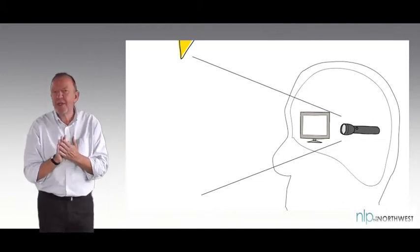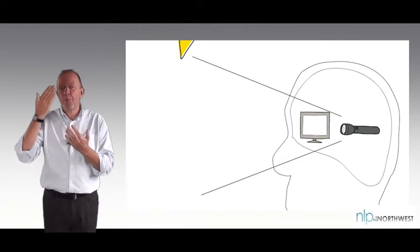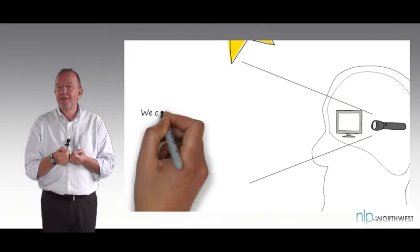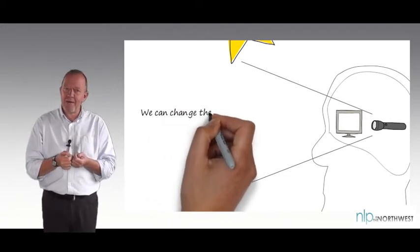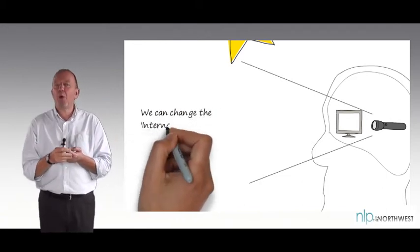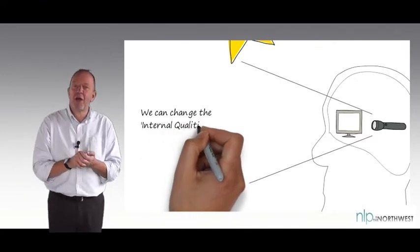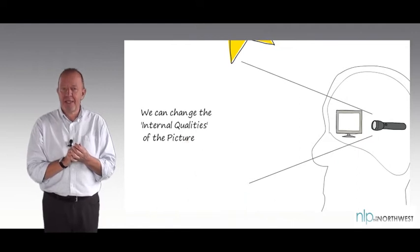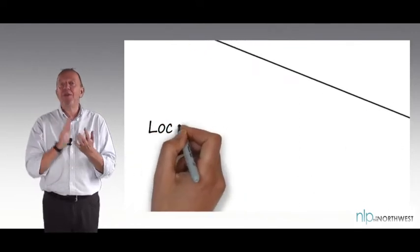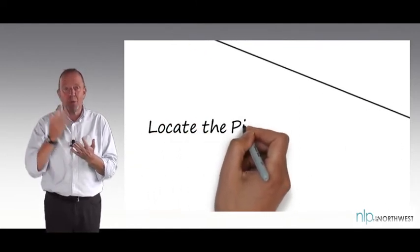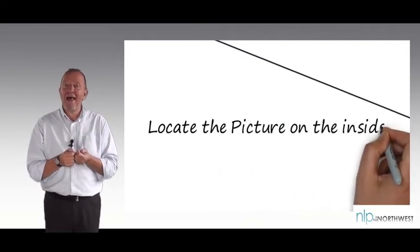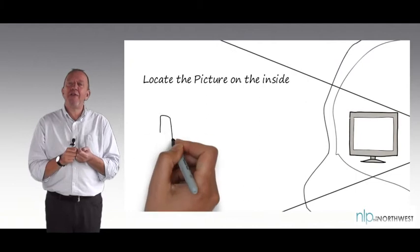One of the things that you can do with this is once you locate what sort of image you've got going on the inside, whether it's something remembered or something that you're imagining, you can play about with the qualities of it. You don't have to change the content necessarily, but you can play about with the qualities. To do this you have to locate the image. What sort of picture am I running in my head? Then you imagine that that picture's on a screen.